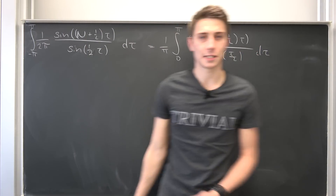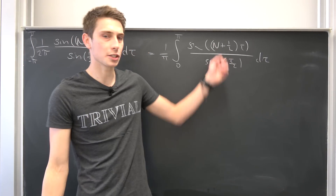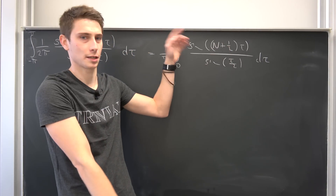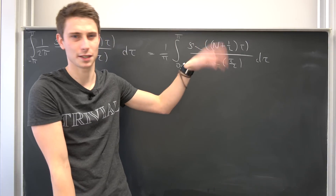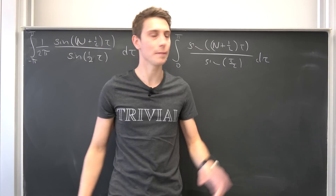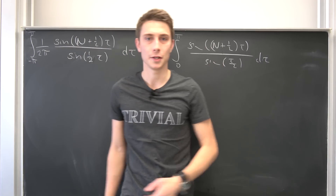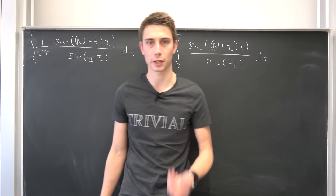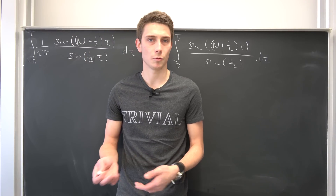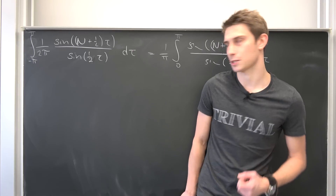In my first attempt I tried using addition formulae, breaking things up into cosine times cosine minus sine times sine, but it didn't work well because of the singularity. You could use complex analysis — it should work — but I'd like to choose a different path using the sum definition of the Dirichlet kernel from the last video.